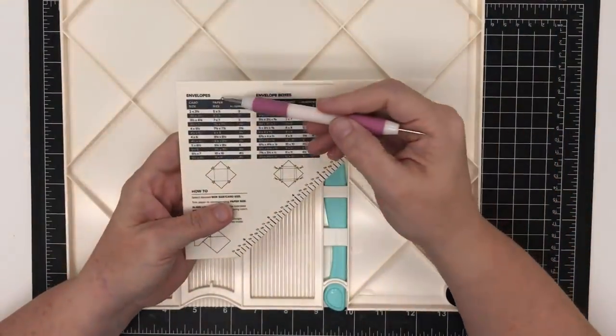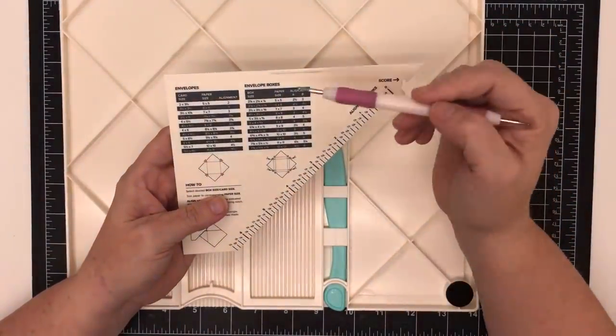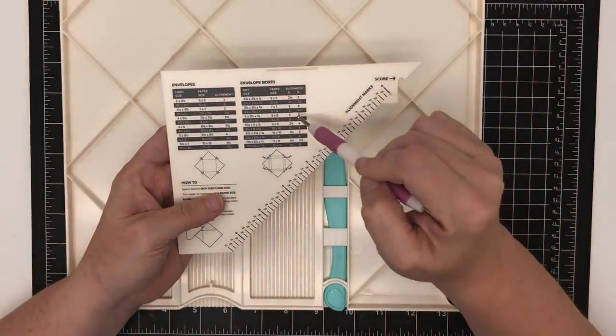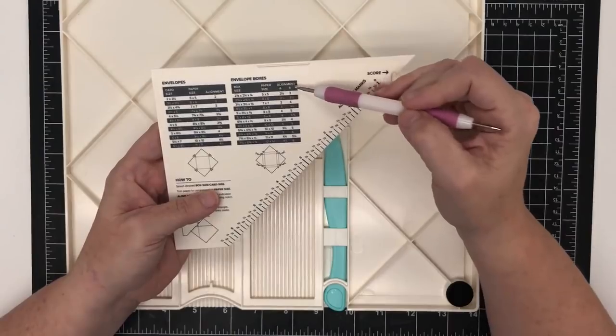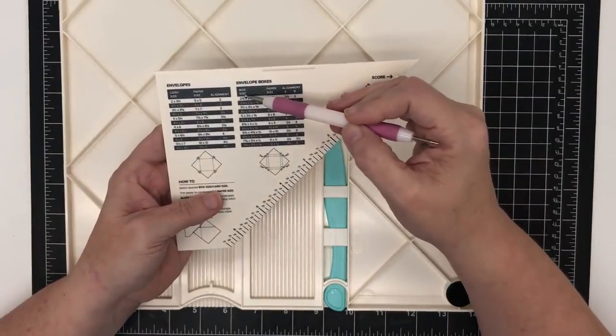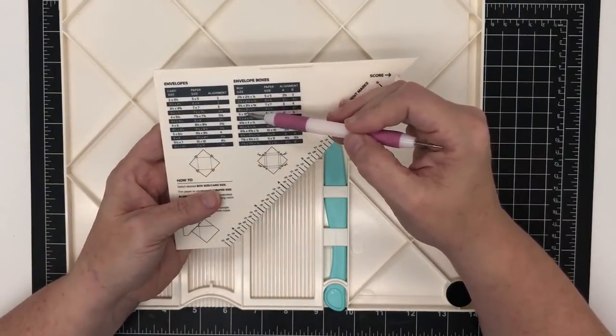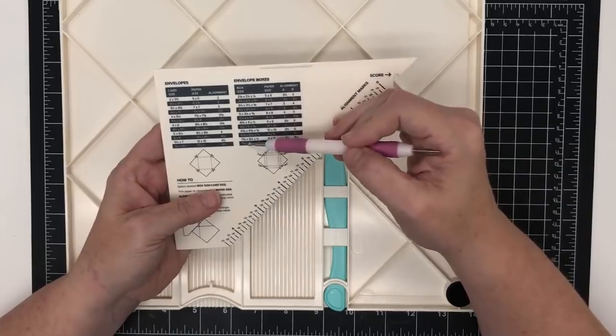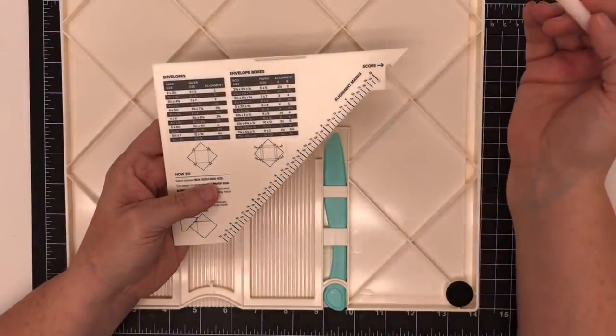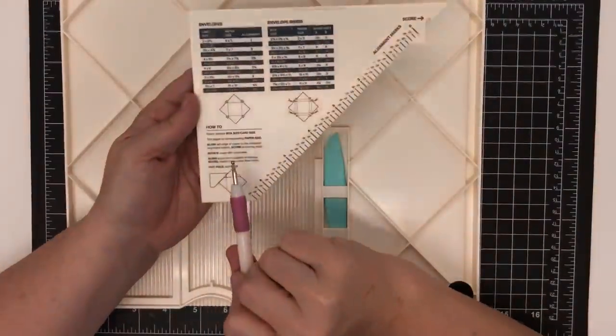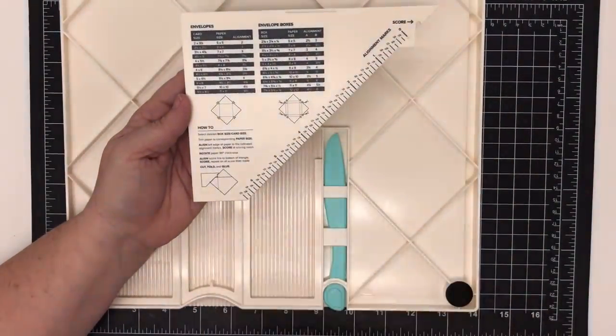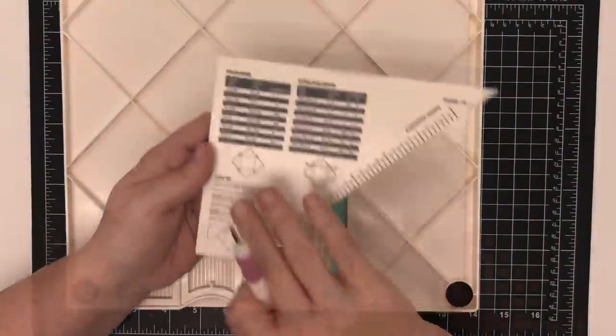It also has measurements here for you for your standard or most used card sizes. It also has box measurements. That's pretty cool. These boxes are, let's see, here's the sizes, two and seven eighths by two and seven eighths, three and a half here. This one's five up to about seven and three fourths by five and three fourths. So that's pretty handy to have. It also gives you your how-to right here on the little envelope maker.